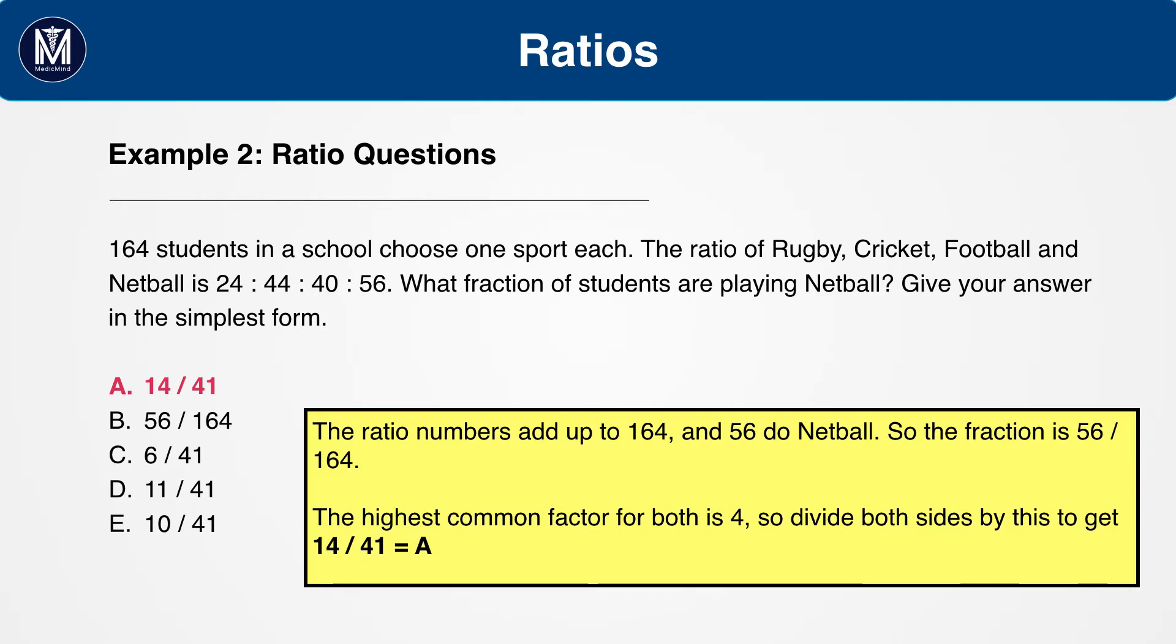The answer is 14 over 41a. There are 164 students. Check that the ratio adds up to this, and you will find that they do. Therefore, 56 are playing netball. 56 over 164 play netball. We need to simplify this fraction, so find the highest common factor, which is 4.